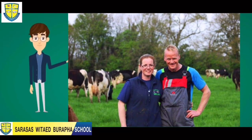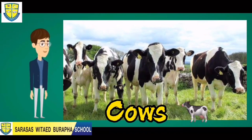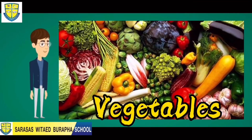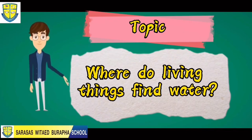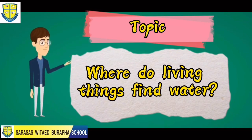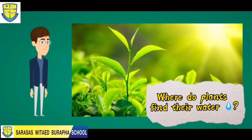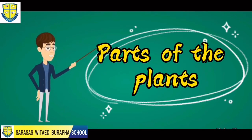People raise animals like chickens, cows, and pigs on farms. People grow plants like vegetables and fruits in fields and gardens. Where do living things find water? Let's start first with plants — where do plants find their water? Let's identify the parts of the plant.